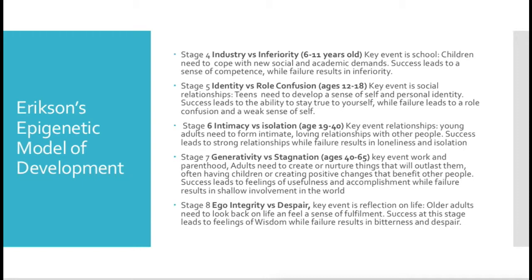Stage five is Identity versus Role Confusion, from ages 12 to 18. The key event is social relationships. Teens need to develop a sense of self and personal identity. Success leads to the ability to stay true to yourself, while failure leads to role confusion and a weak sense of self.